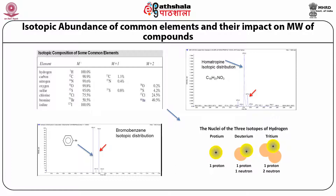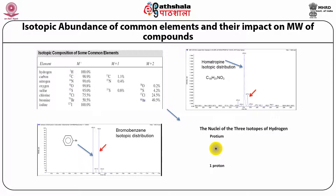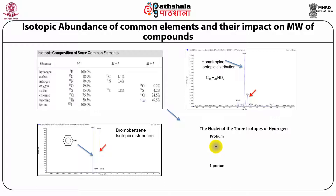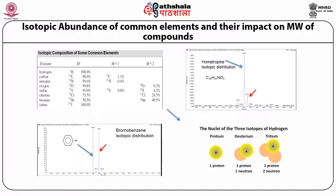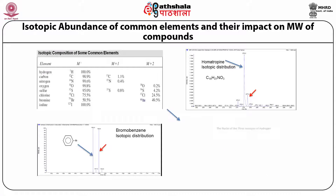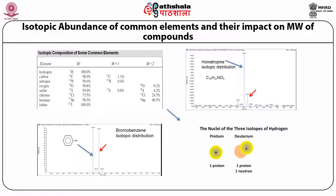For example, homotripine at molecular weight 276.2 is a major isotope, and 277.2 (one mass unit above) is the next isotope, showing naturally occurring isotopes of all elements. For halides like bromobenzene, the isotopic distribution is very interesting — the second isotope is about 99% of the first. Bromine-79 is about 50.5% and bromine-81 is 49.5%, so the third isotope of bromine exists in high amounts. Understanding isotopic distribution helps in analytical quantification.